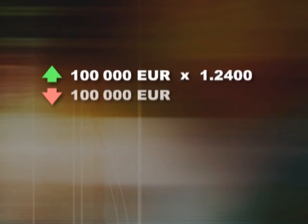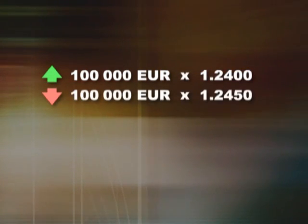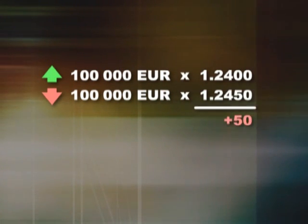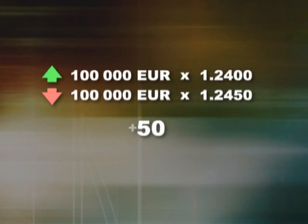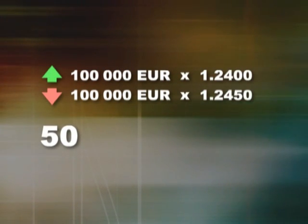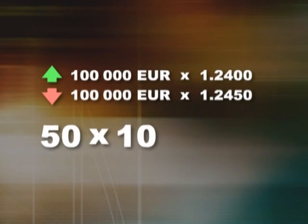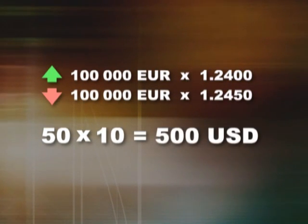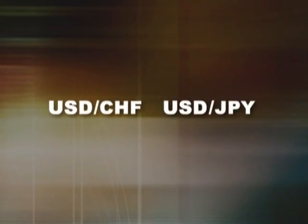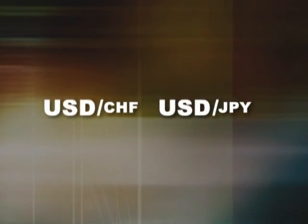Have a look at this example: you have bought 100,000 euro at a price of 1.2400 and sold at a price of 1.2450 — you've earned 50 points. Multiply this by 10 and you've made $500 on the day.